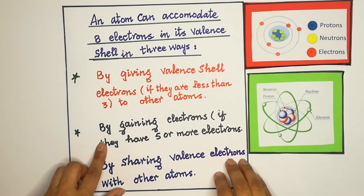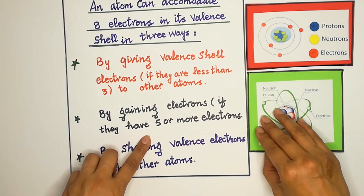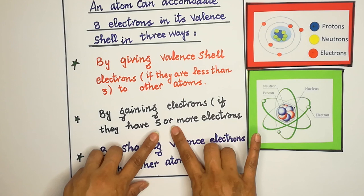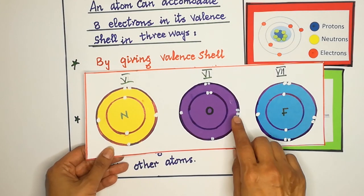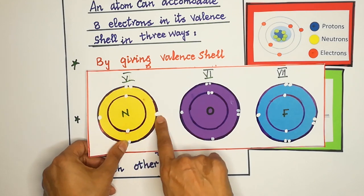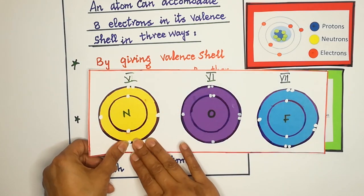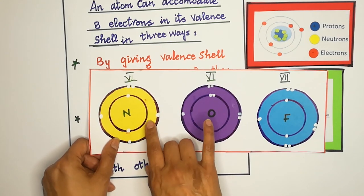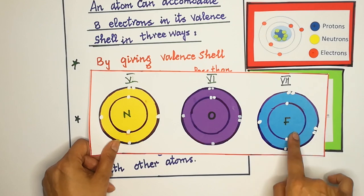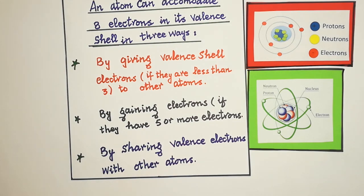Doosra tarika: by gaining electrons — atom electron gain karke apna octet ya duplet poora karega. Agar electron gain karega to valence shell mein electrons five ya us se zyada hone chahiye. Minimum five — jaise five hain to teen lega: 5, 6, 7, 8 — teen leke eight poore karega. Six, seven balance electrons hain tab bhi woh electrons lega.